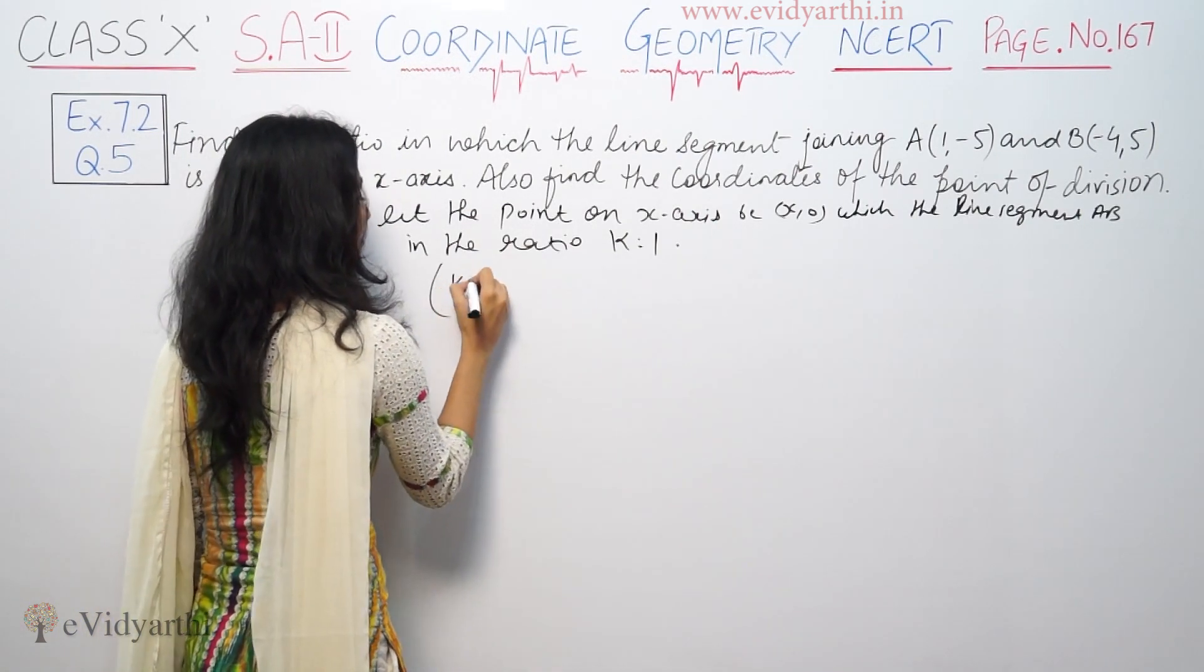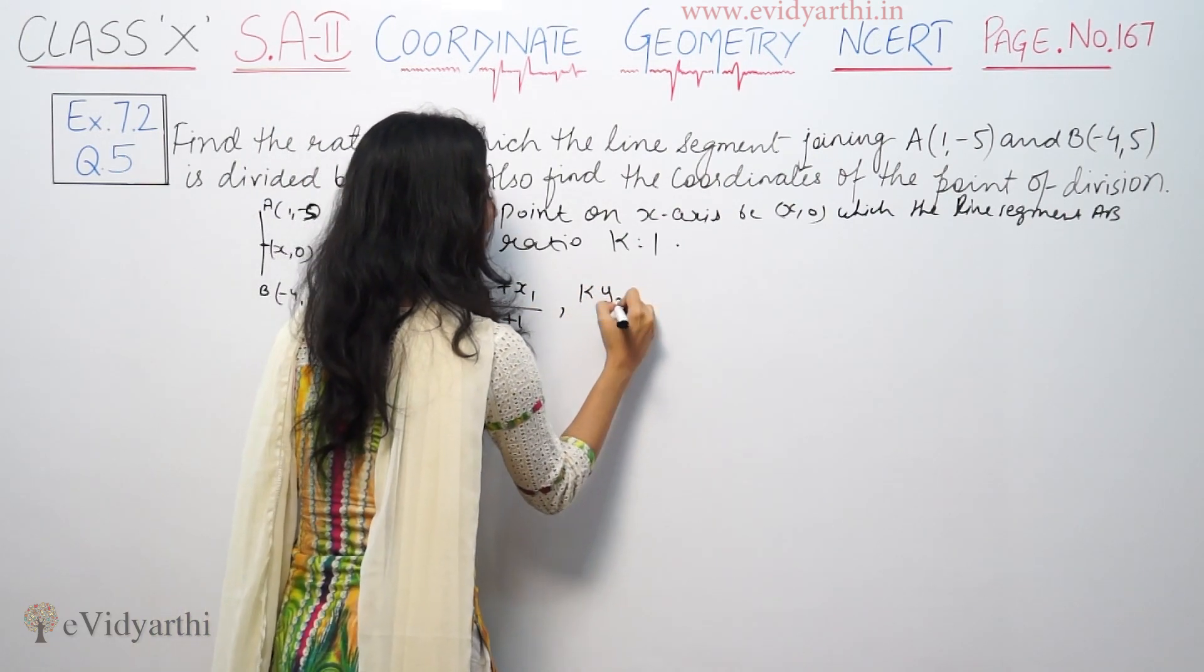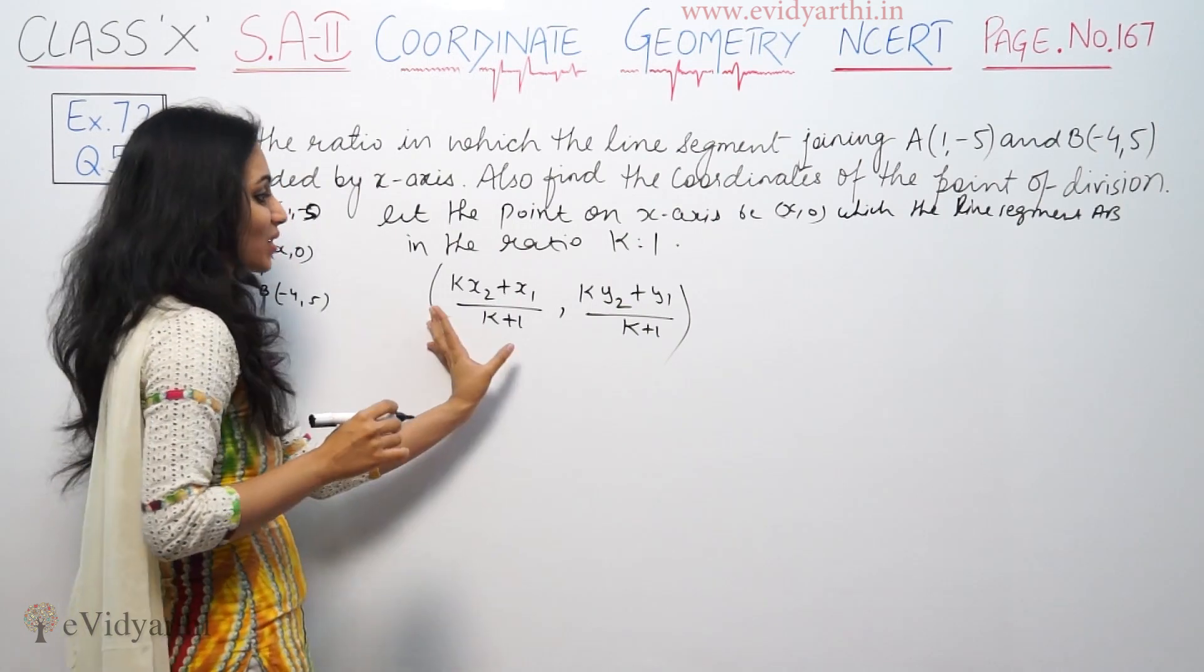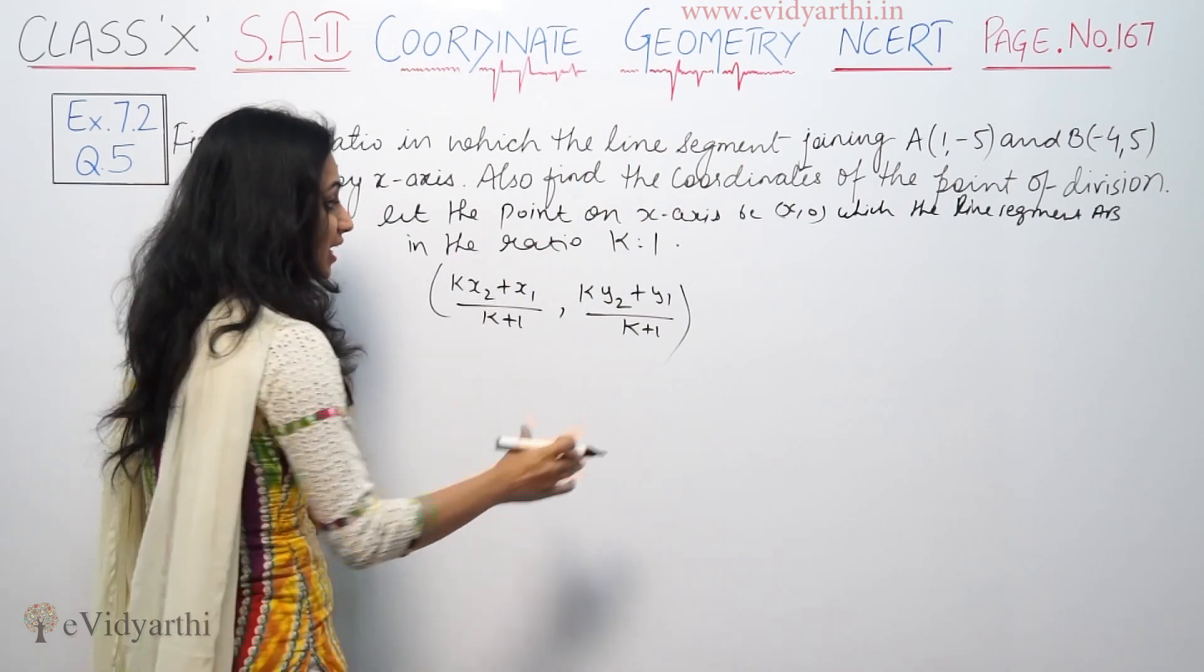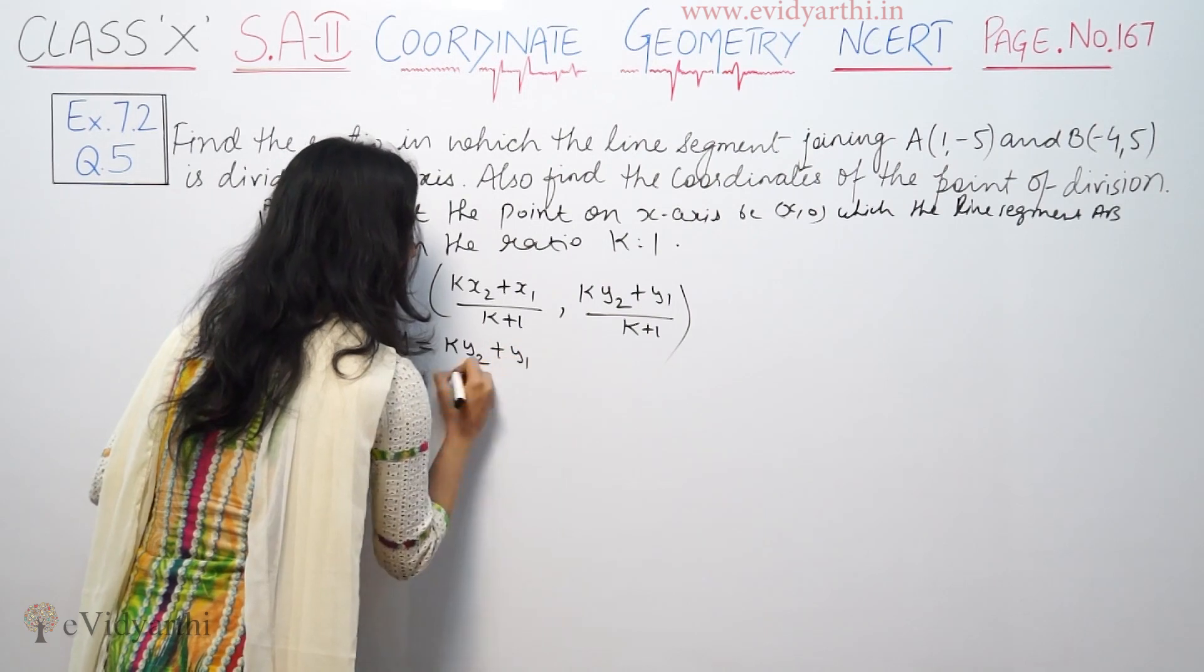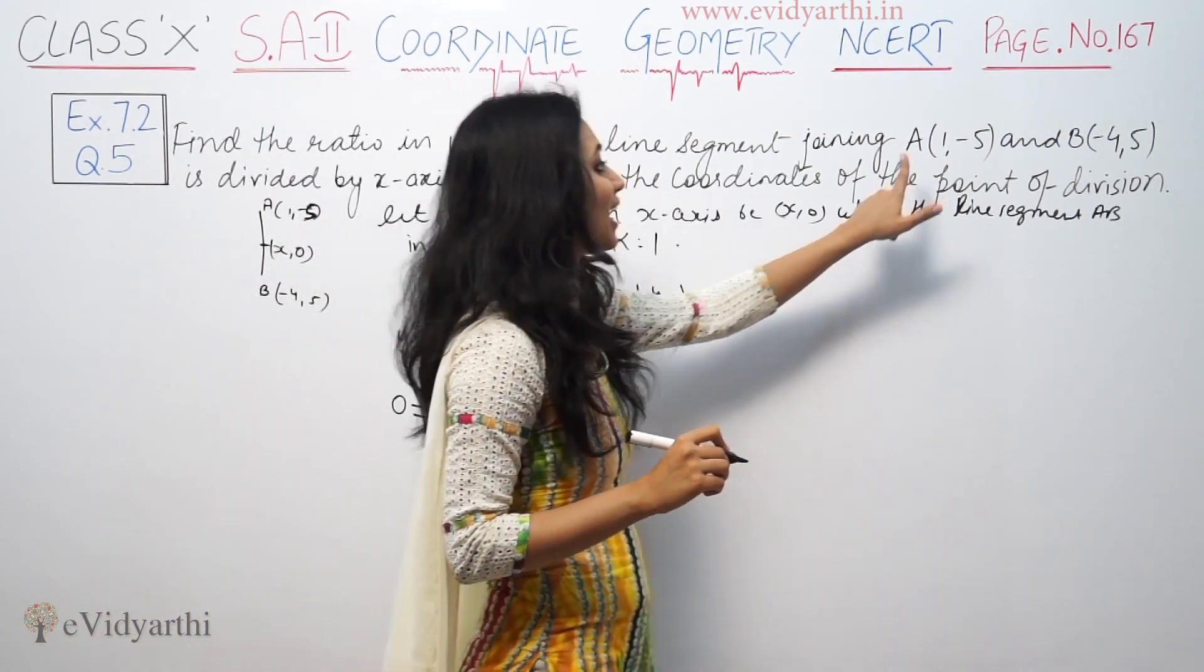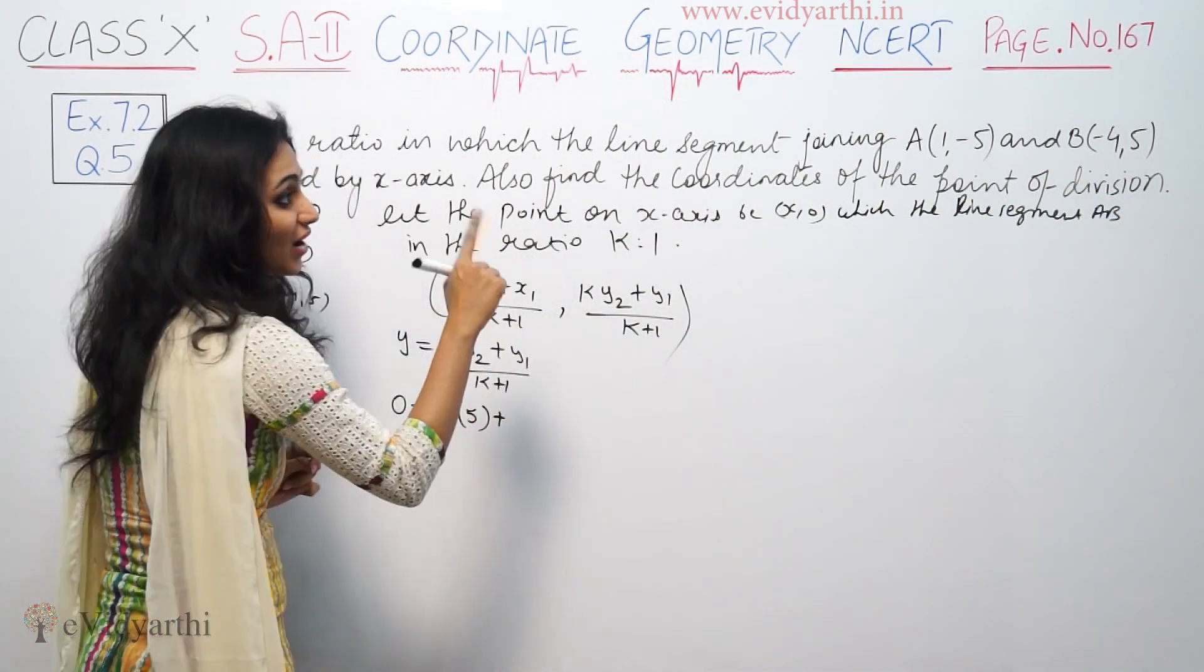Using the section formula: y = (k·y2 + y1)/(k+1). The y-coordinate is 0. So 0 = (k·5 + (-5))/(k+1), which gives us 5k - 5 = 0.